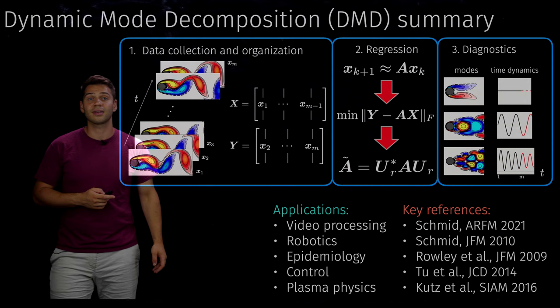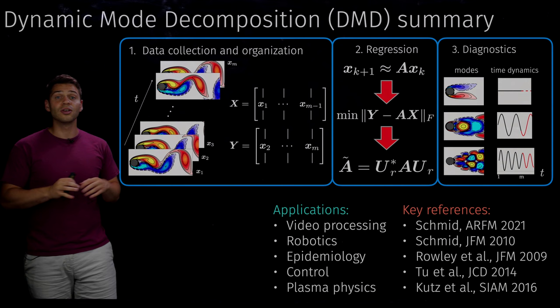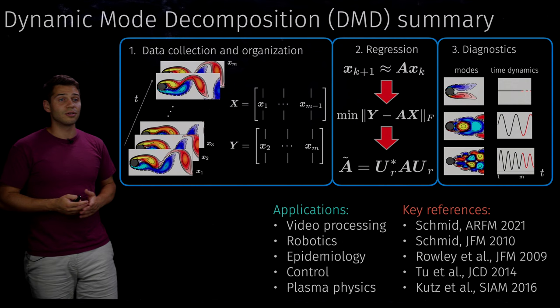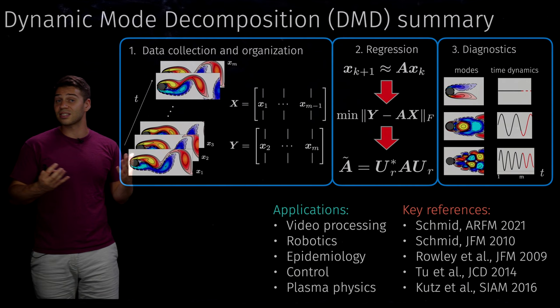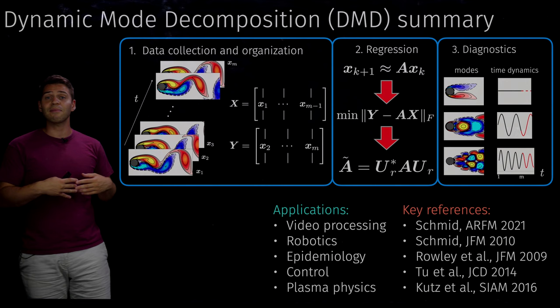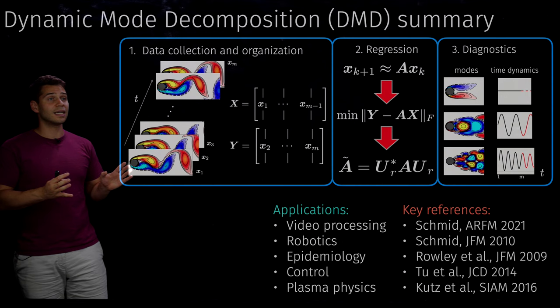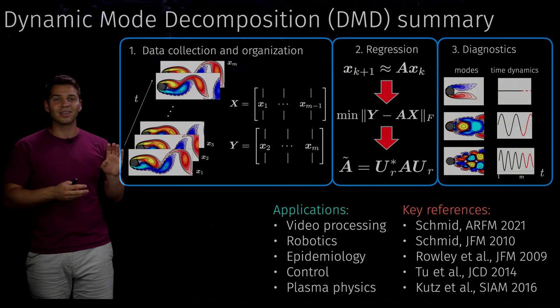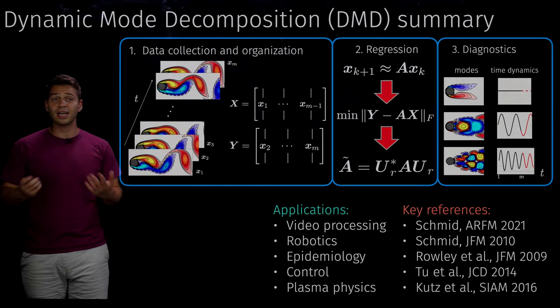One really cool thing about DMD is that it's completely equation-free. There was no point in this process where I told the algorithm we were studying a fluid mechanics system or that the flow was incompressible. This gives DMD huge applicability across many areas. But one could say that's indicative of a lost opportunity — there was no chance to include our physical knowledge about conservation laws, invariances, or symmetries, despite centuries of physics work on fluid mechanics.